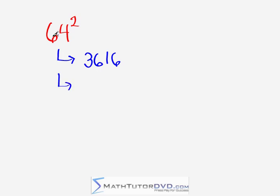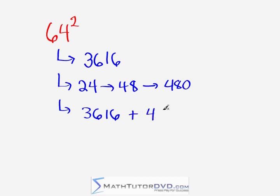The next thing we do is we take 6 times 4, we multiply these digits together, giving us 24, then we double that to 48, then we put a zero, 480, right? And then finally we just add them together, 3,616, plus 480. Now, we do have to use a little bit of our mental math tricks to do this, so let's work on that.